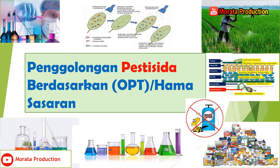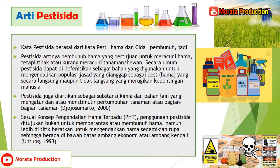Penggolongan pestisida berdasarkan OPT pertanian atau hama sasaran. Kata pestisida berasal dari kata 'pes' yaitu hama, dan 'sida' yaitu pembunuh. Jadi, pestisida artinya pembunuh hama yang bertujuan untuk meracuni hama, tetapi tidak atau kurang meracuni tanaman atau hewan. Secara umum, pestisida dapat didefinisikan sebagai bahan yang digunakan untuk mengendalikan populasi jasad yang dianggap sebagai pes atau hama yang secara langsung maupun tidak langsung merugikan kepentingan manusia. Pestisida juga diartikan sebagai substansi kimia dan bahan lain yang mengatur dan atau menstimulir pertumbuhan tanaman atau bagian-bagian tanaman, menurut Jojo Sumarto tahun 2000.